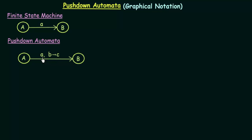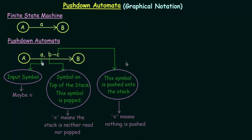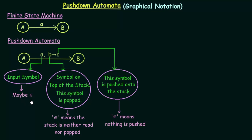In the transition label, we have three symbols: A, B, and then an arrow to C. The first symbol A represents the input symbol that the pushdown automata receives — the same as the input symbol in a finite state machine. This input symbol can also be epsilon, meaning it is an empty symbol.